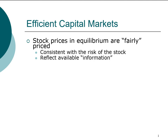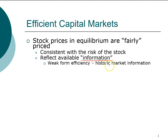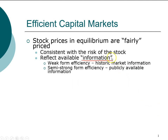There are three categories of efficiency. The first is weak form efficiency, where the information set we are allowed to use is historic market information. Historic market information includes past stock prices and past trading volume — so we ask: does the current price take into account historic trends in stock price and trading volume?